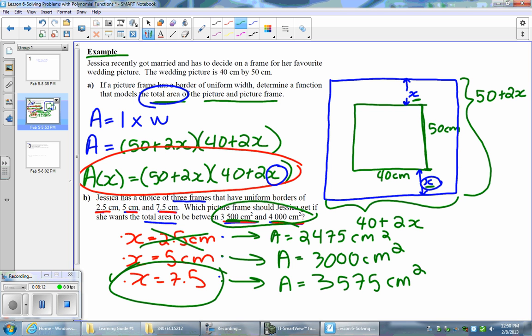So the only x value that reaches my requirements is this one, so my answer is 7.5 centimeters. That is the border that Jessica should buy so that it reaches her area requirements. And that's how you solve a problem using a polynomial.